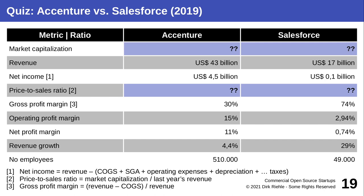Here's an exercise comparing Accenture and Salesforce. Accenture is a large consultancy — the original Andersen Consulting — doing all kinds of IT projects: a project firm. Salesforce is a software as a service or cloud firm. Accenture is notable because, unlike most consultancies, it's publicly traded, so we can see what the stock market thinks it's worth. The market capitalizations are shown with question marks for now — we'll see them in a moment.